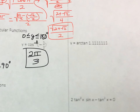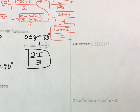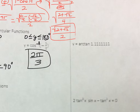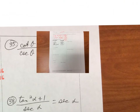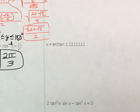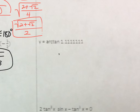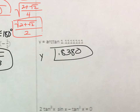We've got a problem where we have arc tangent of 1.1 repeating. That's obviously not on the unit circle, so this becomes a calculator problem. You'd need to know whether we wanted radians or degrees. Assuming we're in radians, the calculator gives us approximately 0.8380 radians.